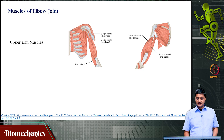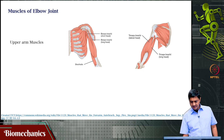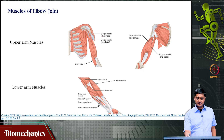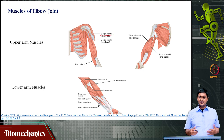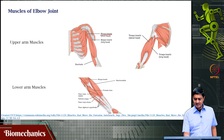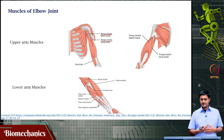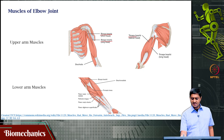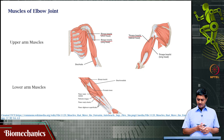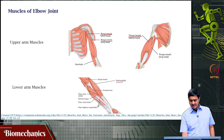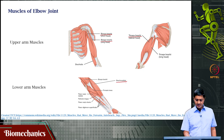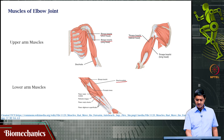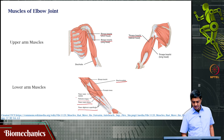The muscles responsible for motion at the elbow joint are located in the upper arm. The biceps brachii has two heads: a short head and a long head. Then there is the triceps brachii, the brachioradialis, and the brachialis. In the forearm there are also muscles: flexor carpi radialis, palmaris longus, flexor carpi ulnaris, flexor digitorum superficialis, and the pronator teres.